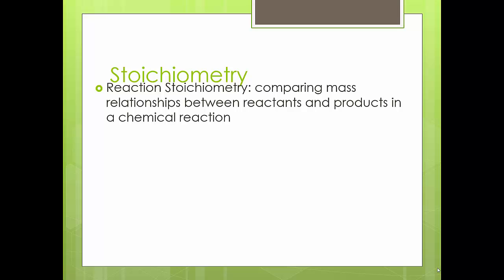So at the top, everybody was hopefully doing the molar masses, and we will check that. Remember, molar mass is the mass of one mole. You're using the periodic table. So let's say if you had lead — use a periodic table. It's 207.2-something. We're going to use it to two decimal places, and remember our units are grams per mole. That's all it was.